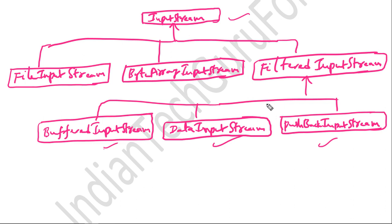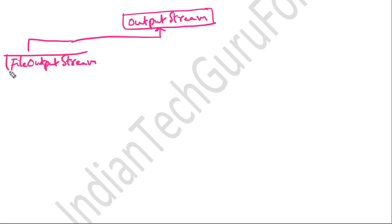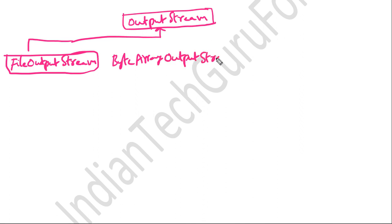Now let us see the classes derived from the OutputStream class. The OutputStream class is also derived from the Object class. Various classes are derived from the OutputStream class. The first one is the FileOutputStream class, which is used for file output. The second one is the ByteArrayOutputStream class, which is used for byte array operations.